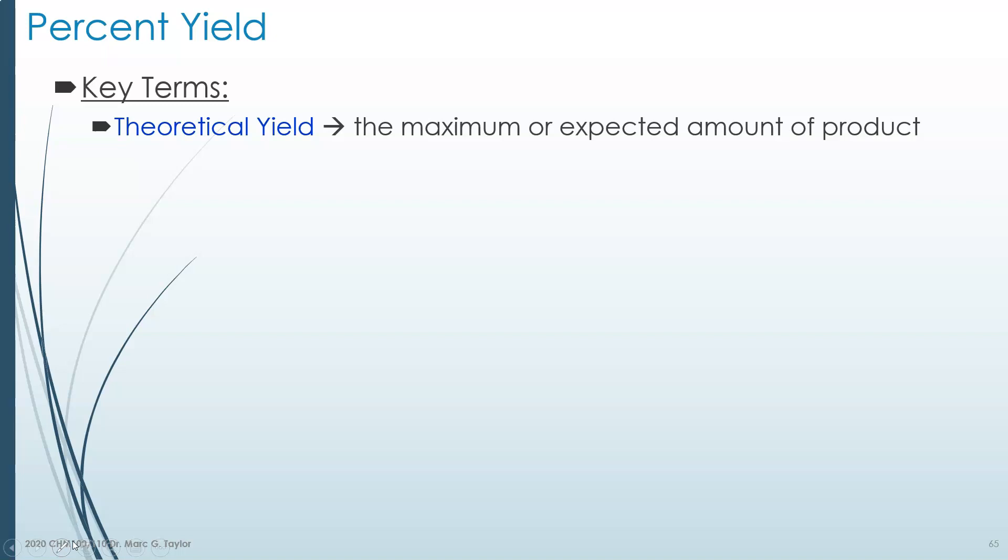We calculate this amount in Chem 110, but we do not calculate it in Chem 100. So I'll just give you the amount that you would expect to get in a chemical reaction. That's your theoretical yield, which might be a certain amount of grams.